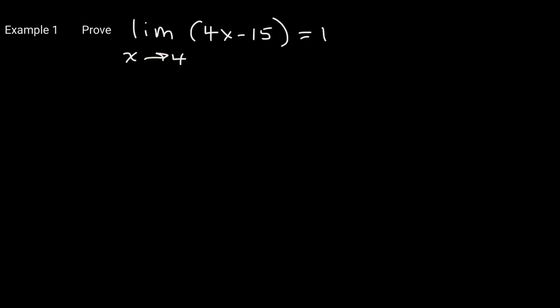We need to prove that the limit of the linear function 4x minus 15, as x values approach 4, is equal to 1. We can just plug in 4: 4 times 4 is 16, and 16 minus 15 is 1. But we want to use the precise epsilon-delta definition to prove this limit.